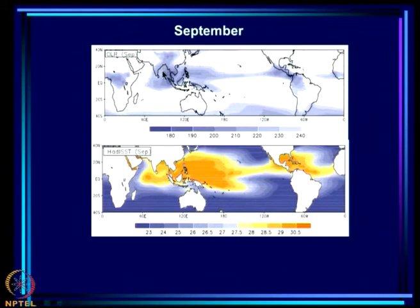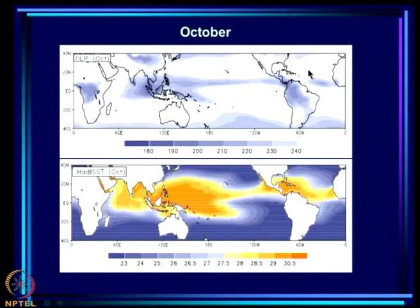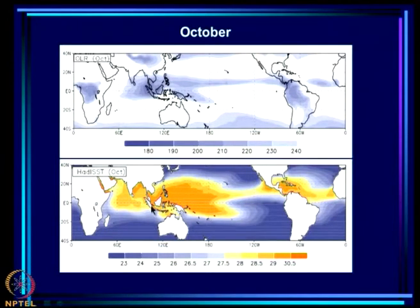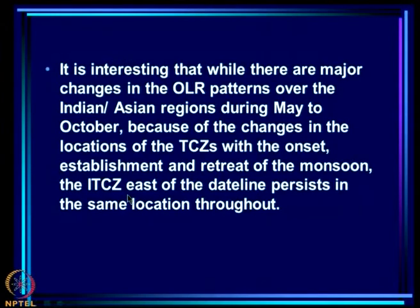In September the system has become weaker; the monsoon has started to withdraw, but the warm pool region and coherent band of low OLR stretching right across the Pacific remain. The same thing continues in October, but now the monsoon has withdrawn from much of the Indian landmass and we have a band at roughly 5–10°N going all the way from the Indian region right across the Pacific to the Americas, consistent with the sea surface temperature.